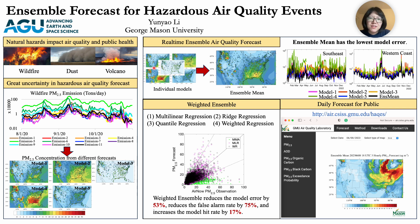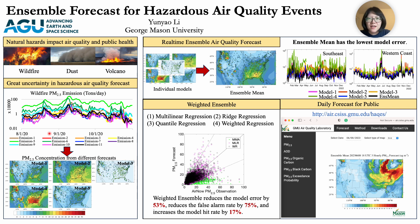However, accurate prediction of wildfire and dust storm air quality is challenging due to uncertainties in wildfire and dust emission and other model processes. For example, here I compare the fire emission from 11 widely used emission datasets. I find that the differences among different datasets is very large — sometimes the uncertainty reaches a factor of 100.